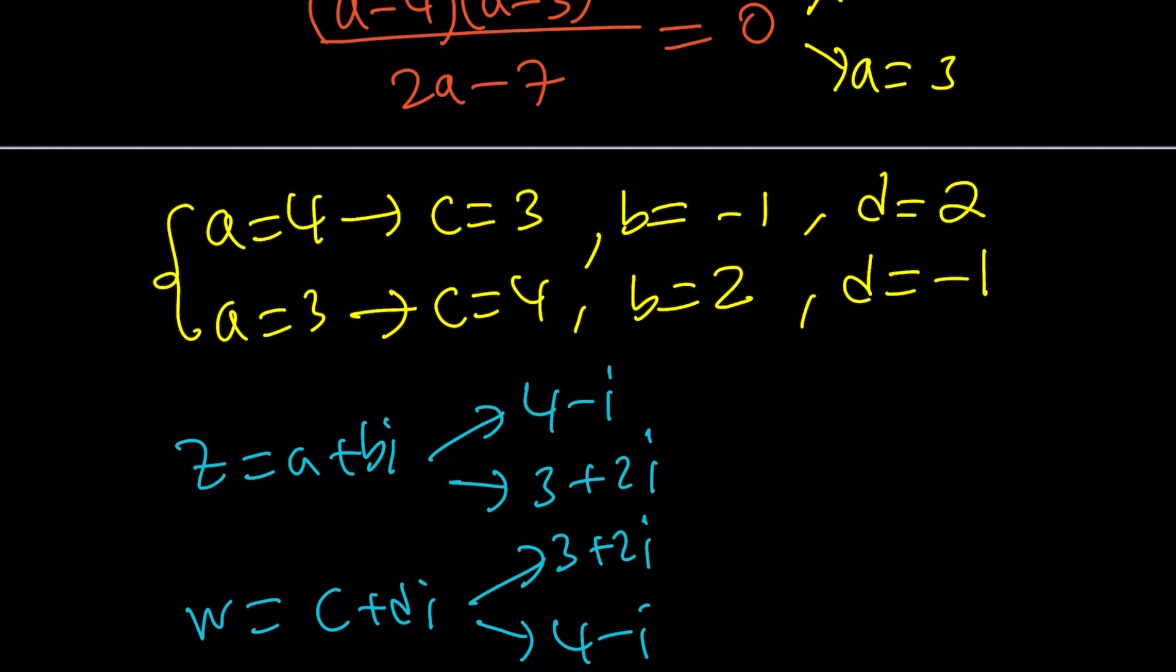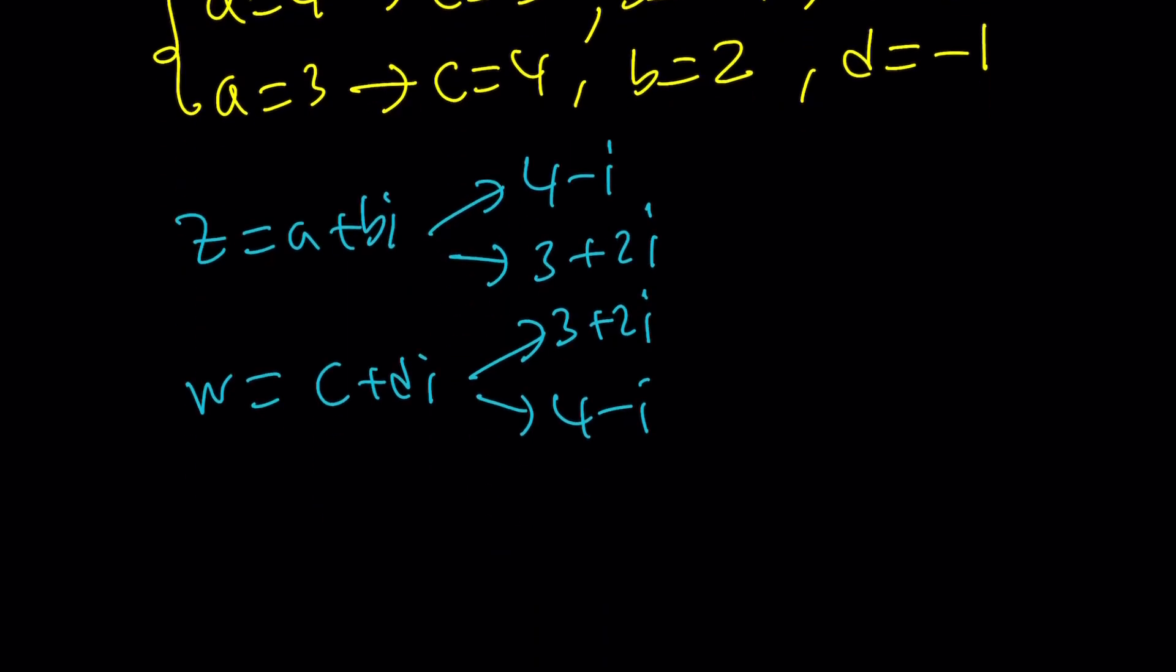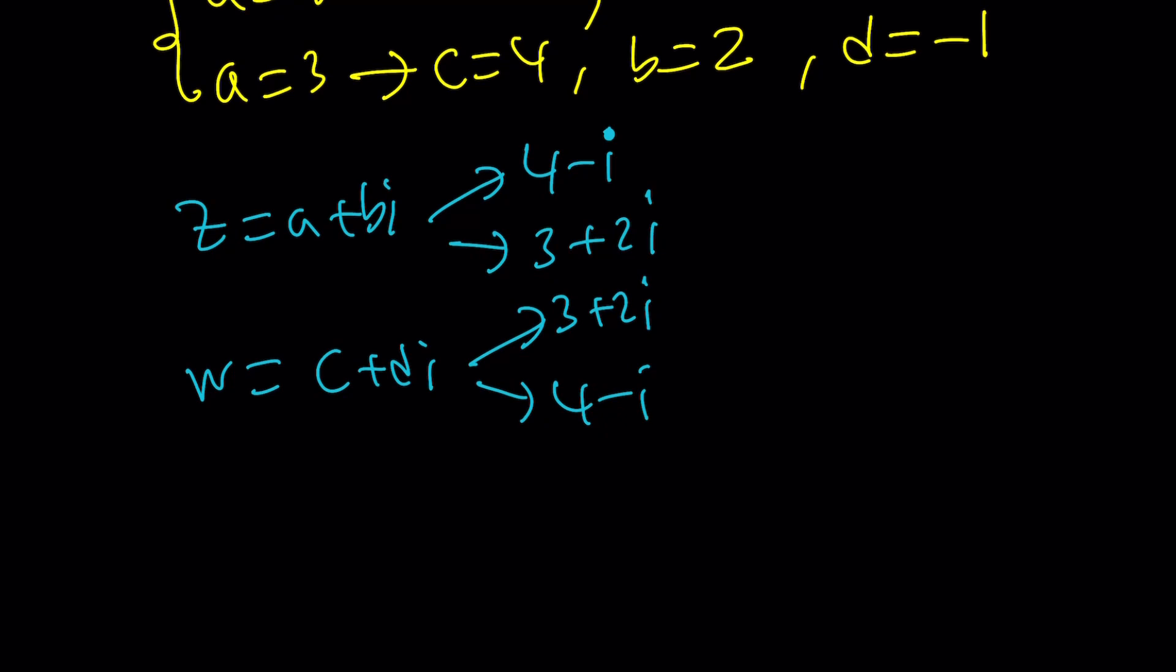Notice that the values of Z and W switch around when one of them is 4 minus I. The other one is going to be 3 plus 2I. And we talked about that at the very beginning. All right. Let's go ahead and talk about the second method now.